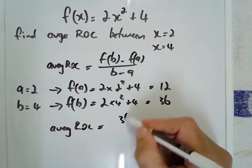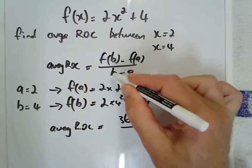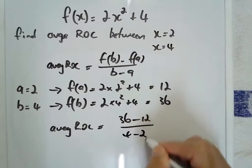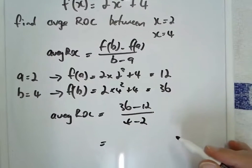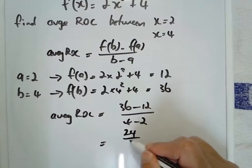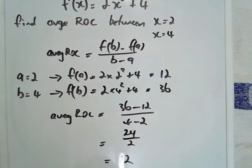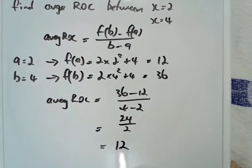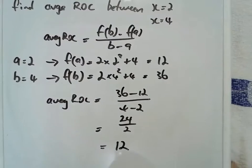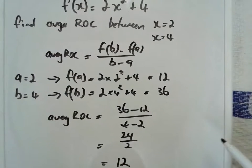F of b, so it's 36 minus 12 over b minus a. 36 minus 12 is 24 over 2, which equals 12. So our average rate of change between those two values is 12.